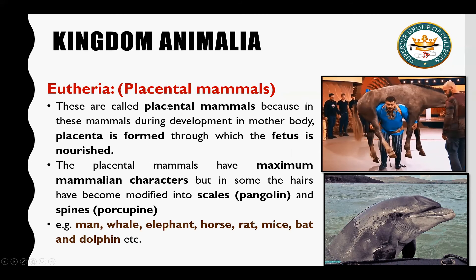Placenta جو ہے وہ connection ہے جو mother body سے fetus کو nourishment provide کرتا ہے۔ یہ placental mammals جو ہیں ان کے maximum mammalian characteristics ہوتے ہیں یعنی یہ most advanced mammals ہیں۔ کچھ کے اندر hairs modify ہو جاتے ہیں — scales میں جیسے pangolin، اور spines میں جیسے porcupine۔ Examples میں man، whale (largest mammal in water)، elephant (land کا سب سے بڑا animal)، horse، rat، mice، bat (flying mammal)، اور dolphin آتے ہیں۔